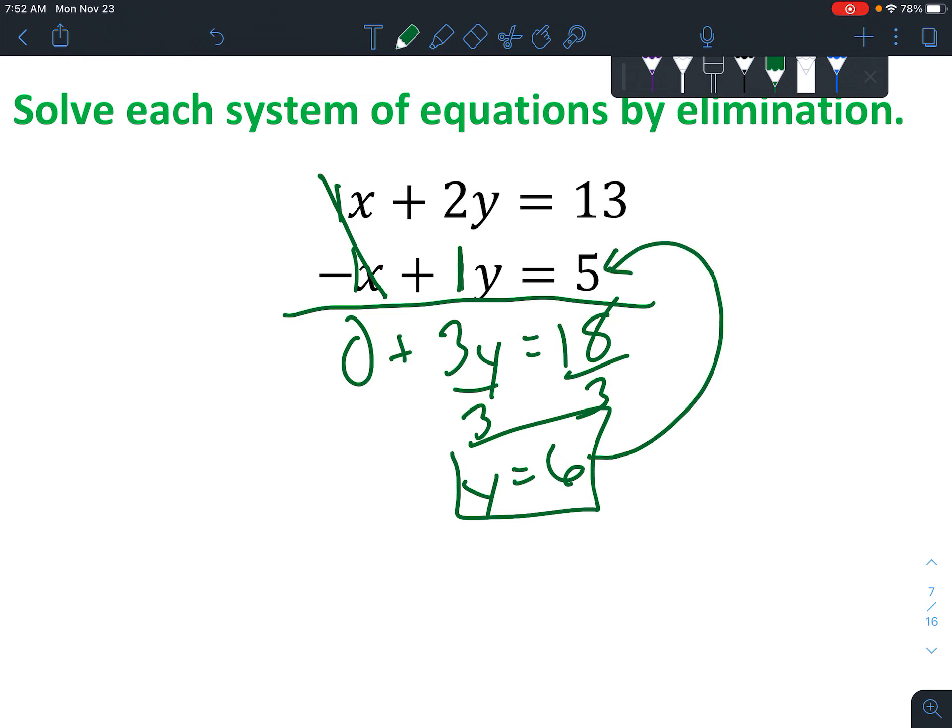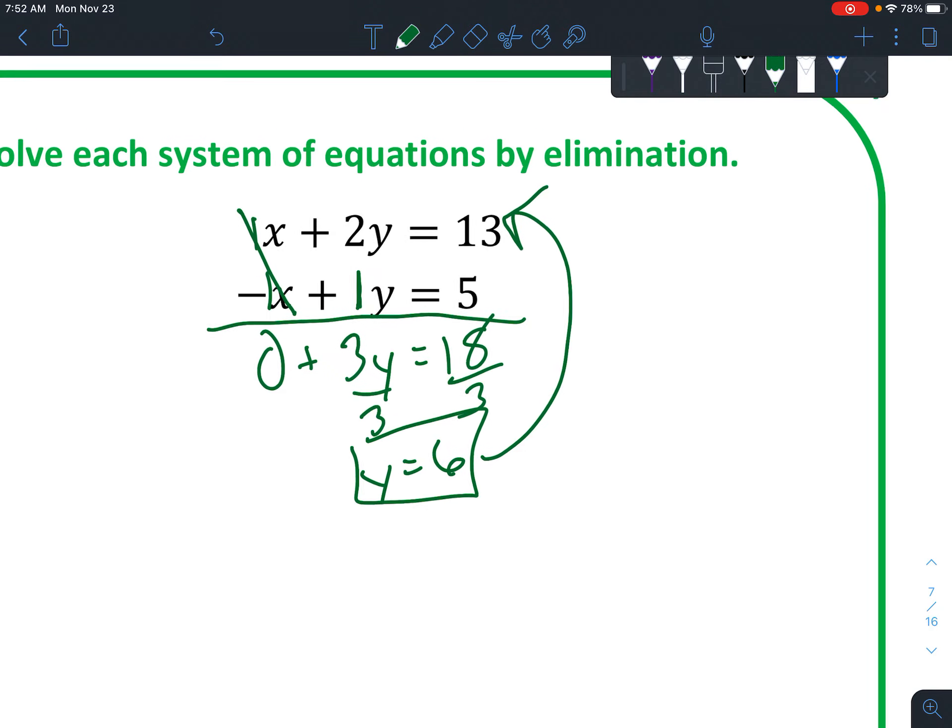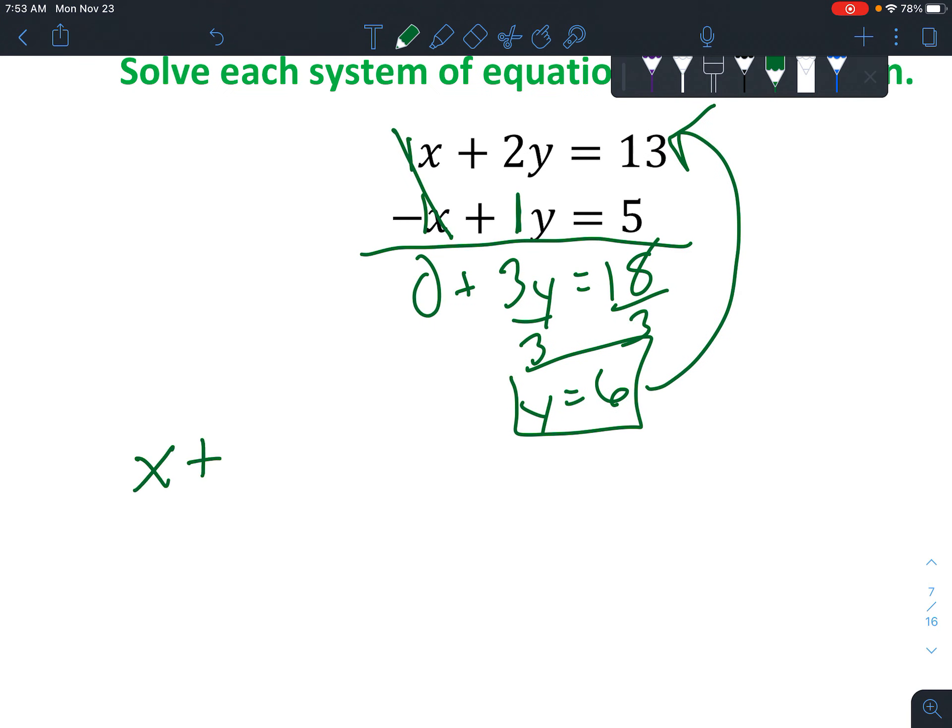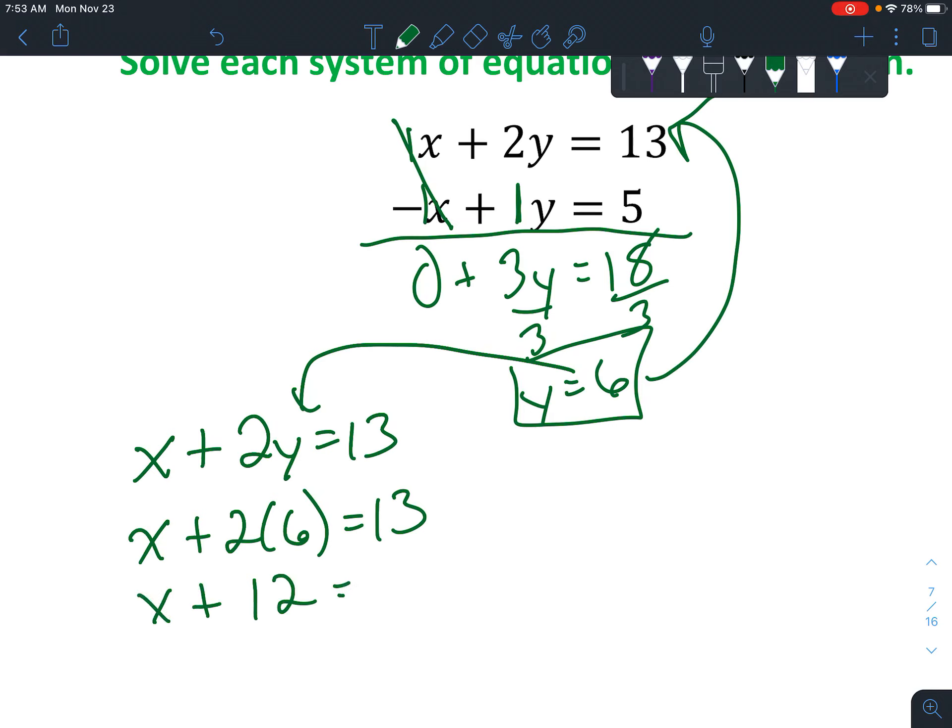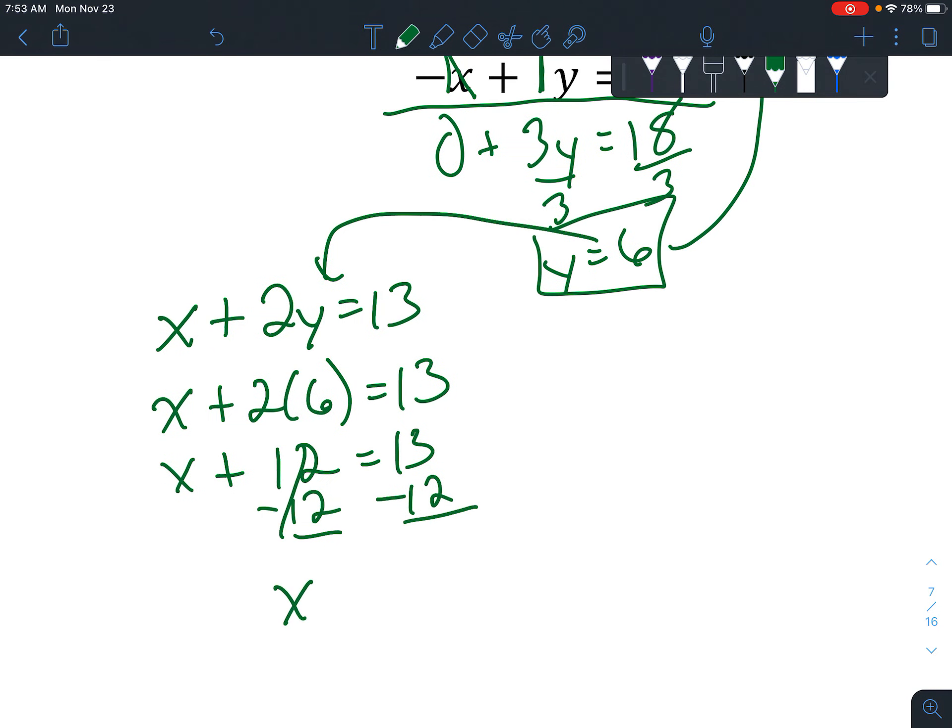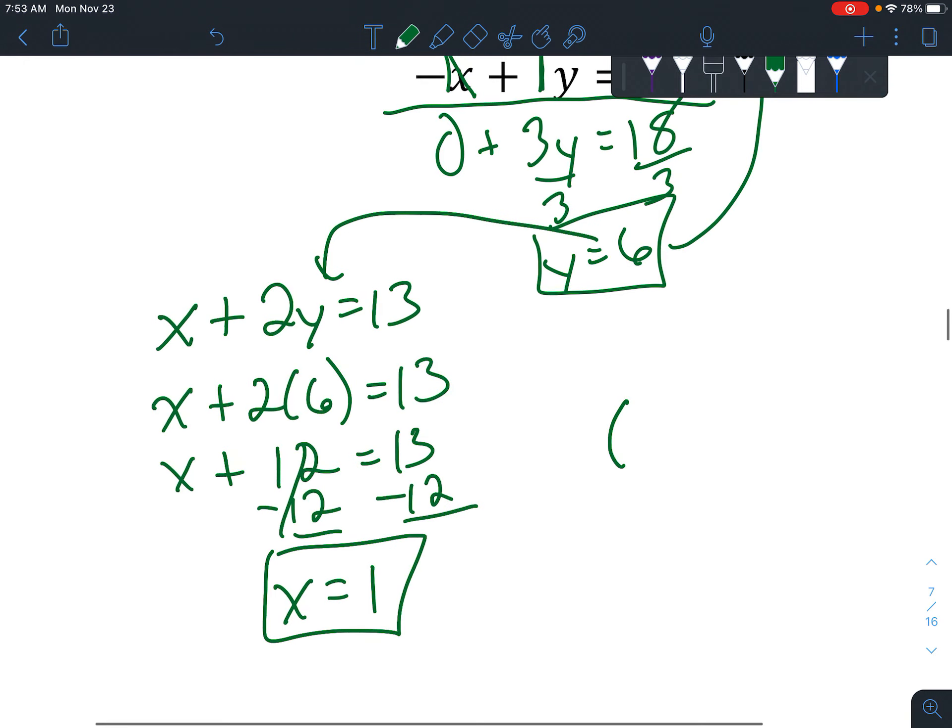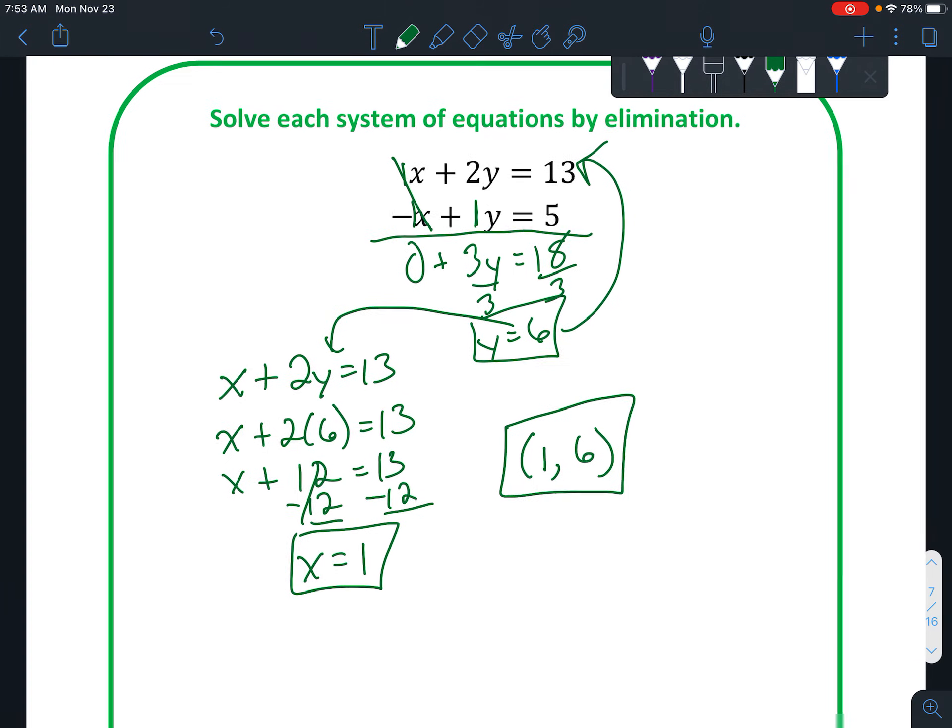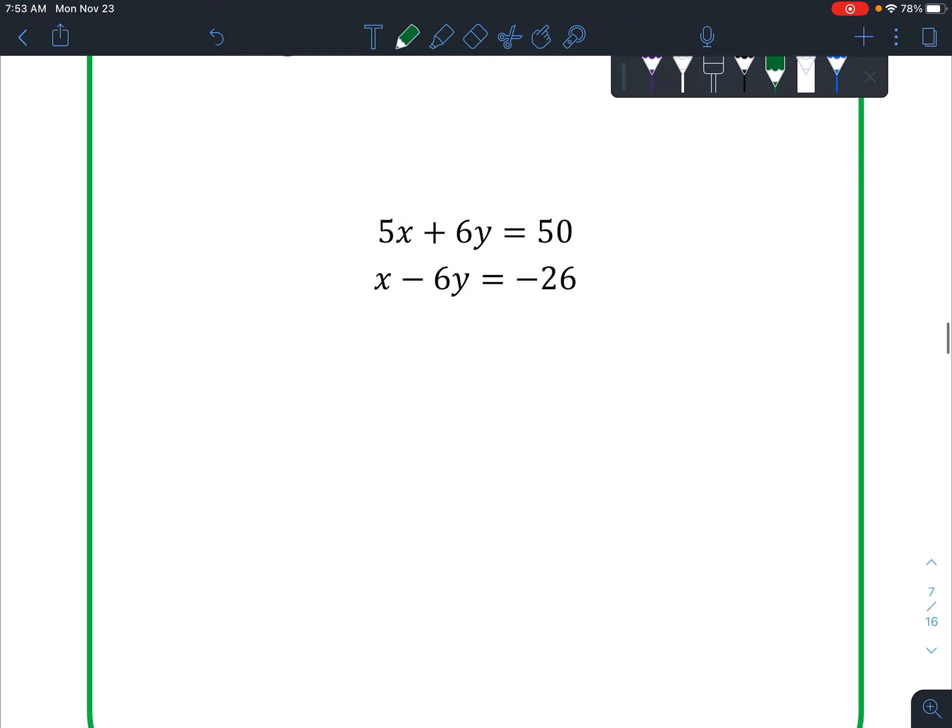And now, remember we want to go back and figure out what our other variable is. Actually, I think I'll use the top one, not that one. Because then we have a y that's kind of already by itself. Because we have x, I'm sorry, not a y, an x. x plus 2y equals 13. And if we plug that y right in, that 6 right in for y, we've got x plus 2 times 6 equals 13. 2 times 6 is 12. And now we really just have to subtract 12 from both sides to get x equals 1. And don't forget to put it in an ordered pair. So we've got x first and then y.